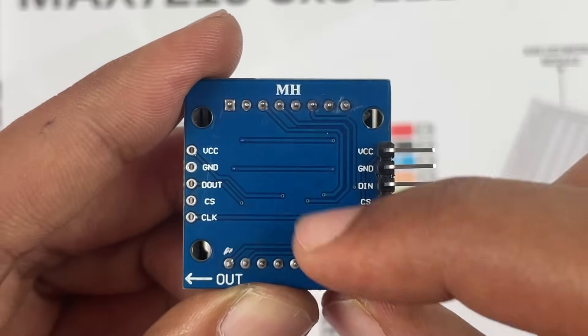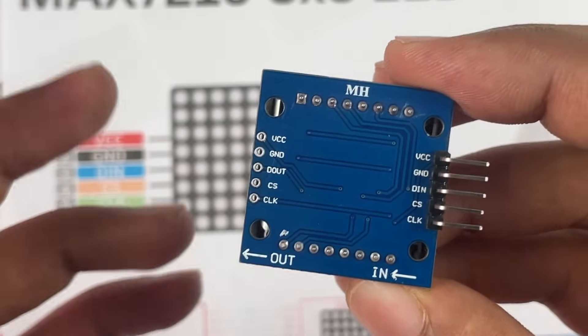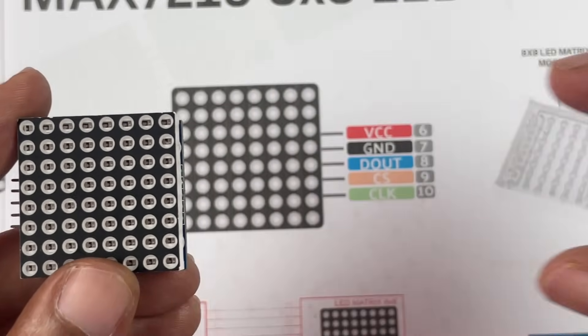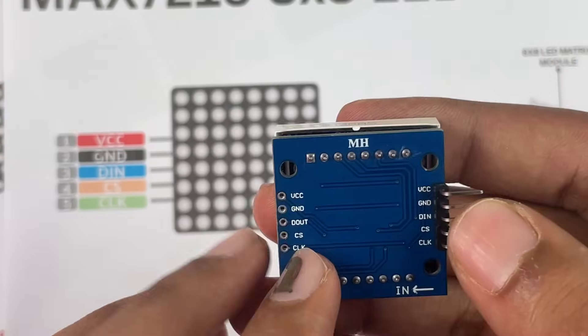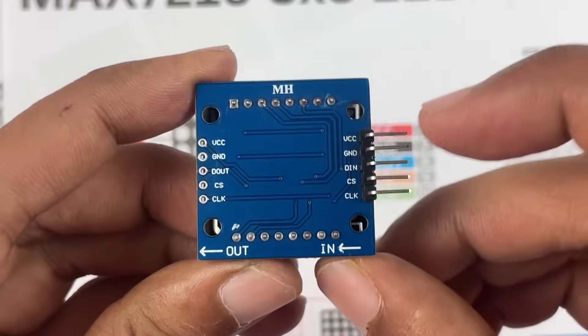We will be using only these five pins. These five pins over here are needed only if you are adding more displays. For example, if you want three more dot matrix displays to be cascaded - the technical term is called daisy chaining - in that case we will be using these five pins.